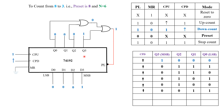Therefore PL is equal to 1, so it will continue with the down count operation. This is the required input configuration with respect to the down count operation: MR is equal to 0 — MR is connected to ground. CPU must be equal to 1 — CPU is connected to VCC. CPD is connected to the clock. Now it is going to perform the down count operation.